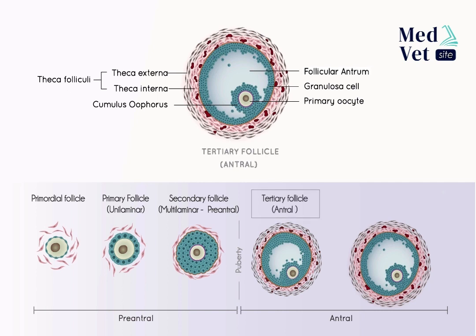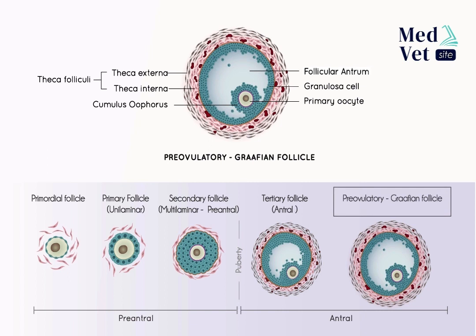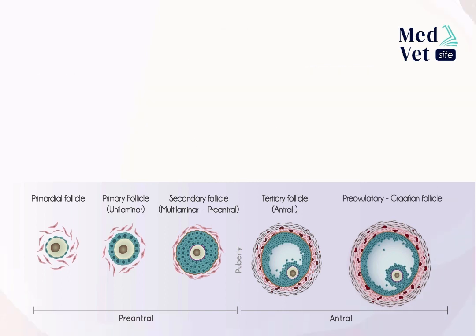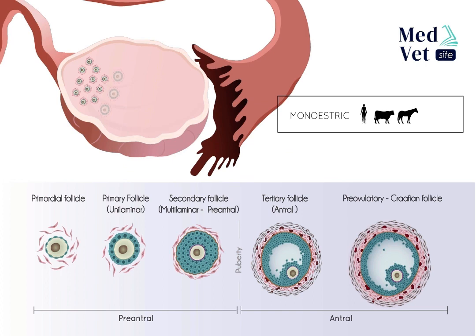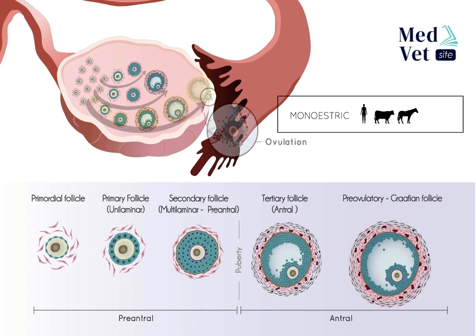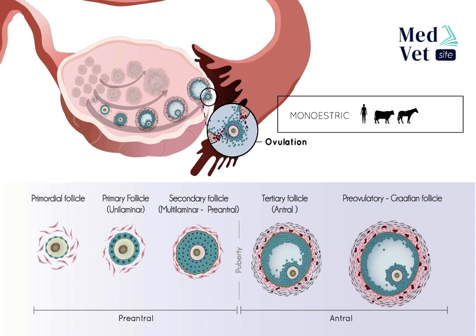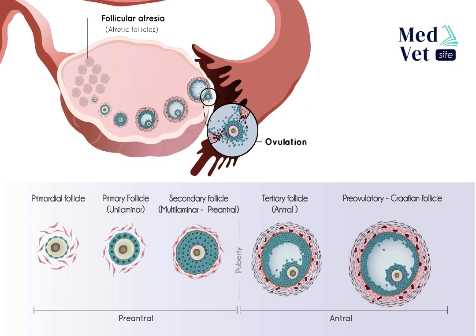Subsequently, the antral follicle reaches maturity, acquires a size of 10 millimeters or more, and is now called the preovulatory follicle or Graafian follicle. In monoestric females, of each group of primordial follicles that begin the growth process during each ovarian cycle, only one becomes a Graafian follicle — known as the dominant follicle, which carries out ovulation. Other follicles degenerate, even those that have reached antral follicle stages; this process of degeneration is known as follicular atresia, which leads to the gradual decrease of the oocyte reserve over time.